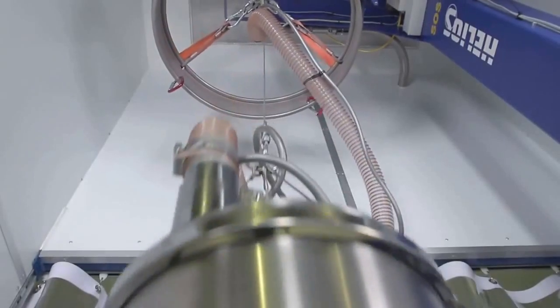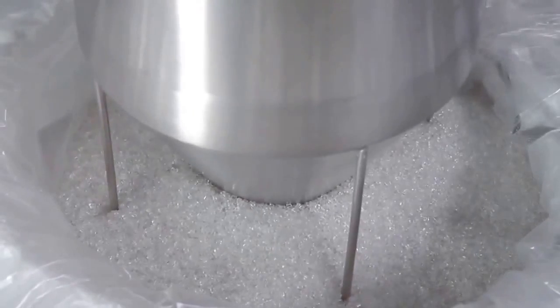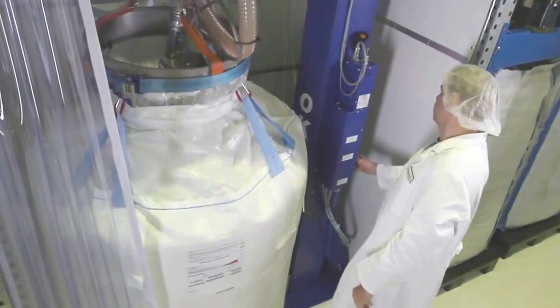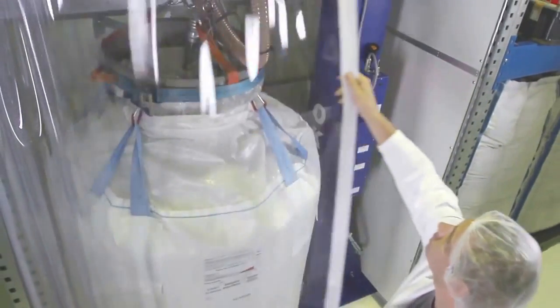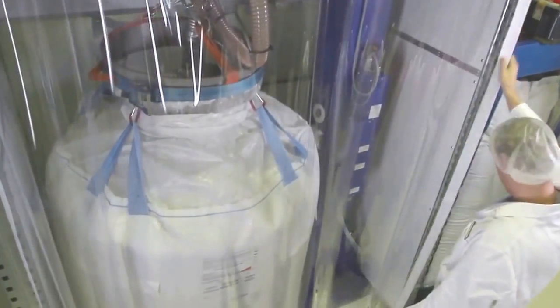A vacuum pipe system conveys the granulate automatically from the large container through the closed piping system into the flexible granulate silos.